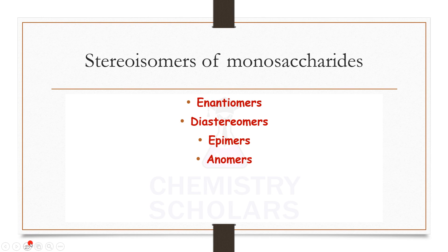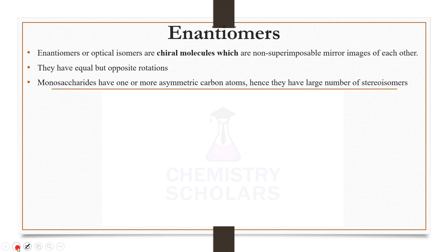This is the next video in the carbohydrate series. In this video we are going to talk about stereoisomers of monosaccharides. We know that monosaccharides have chiral carbon atoms, and that is why they have a lot of stereoisomers. The first and easiest type are enantiomers. Whenever there are chiral carbon atoms you get a number of stereoisomers, and when those stereoisomers are non-superimposable mirror images of each other, they are called enantiomers.